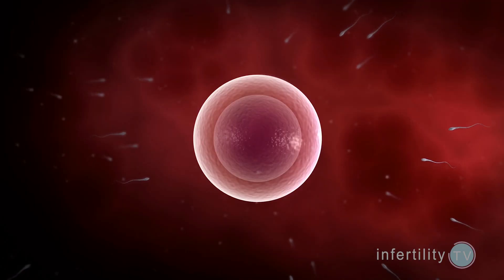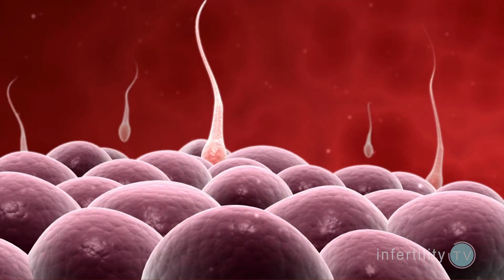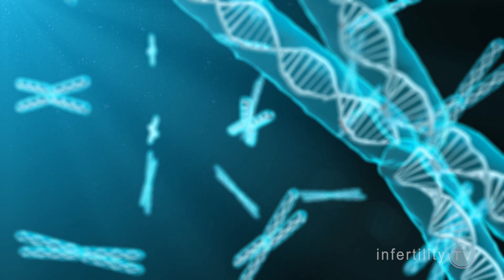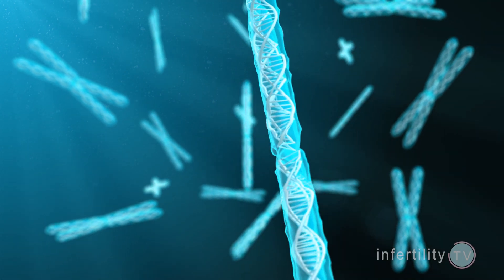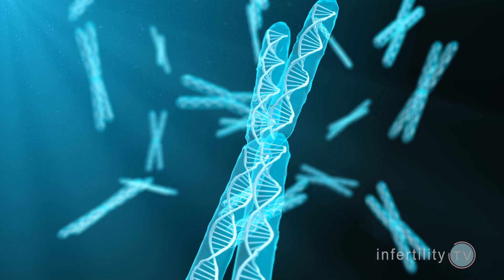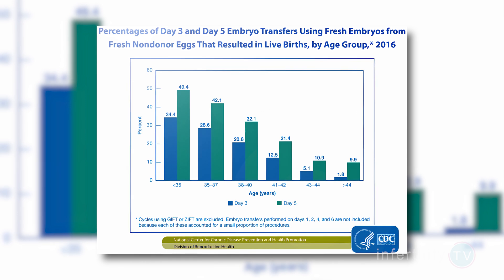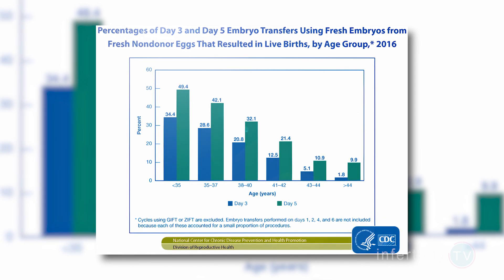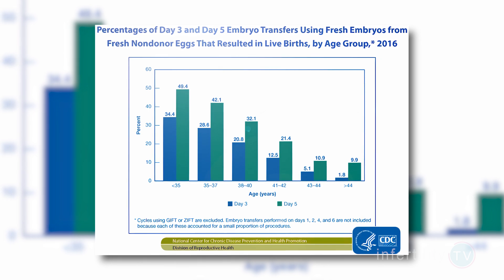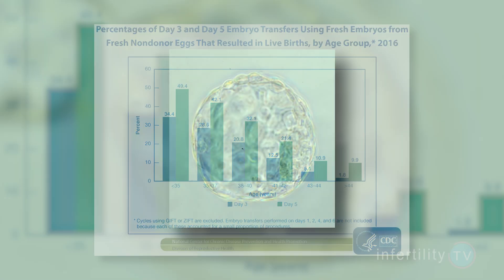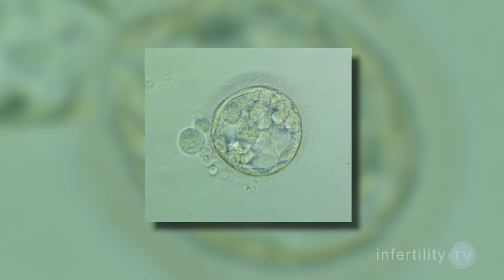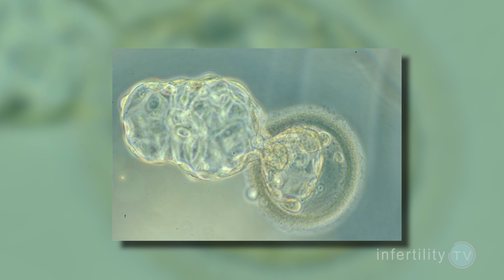Many embryos never reach the blastocyst stage. If an embryo stops developing before the eight-cell stage, it's an egg problem. If it stops after the eight-cell stage, it could be due to problems with the egg, the sperm, or both — there's no easy way to tell. The most common reason embryos don't reach the blastocyst stage is because they have too many or too few chromosomes. Culturing an embryo to the blastocyst stage is a pretty good way to screen out some chromosomally abnormal embryos without testing, though it's not perfect — some beautiful expanded blastocysts can still have chromosome abnormalities.